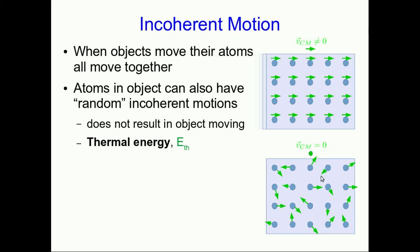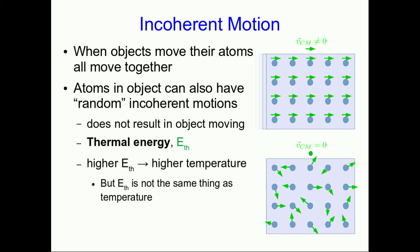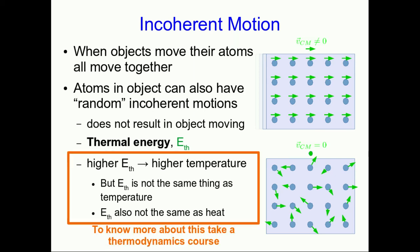The incoherent motions of atoms in an object are responsible for the object's thermal energy, which is another kind of internal energy, but it's not a potential energy because you can't easily convert it back into kinetic energy. Objects with high thermal energy have high temperature. But be careful — thermal energy is not the same thing as temperature, and thermal energy is not the same thing as heat. These fine distinctions get very complicated, so if you want to know more, you should take a thermodynamics course, or a statistical mechanics course.